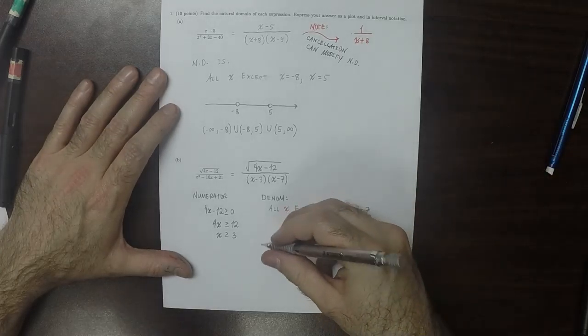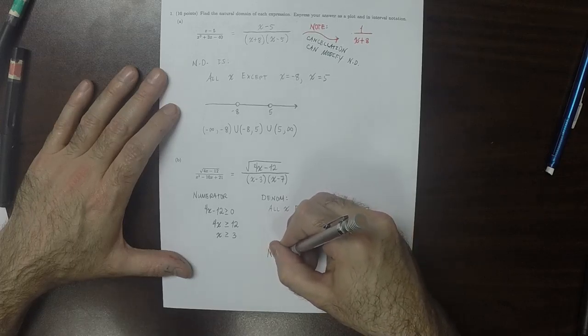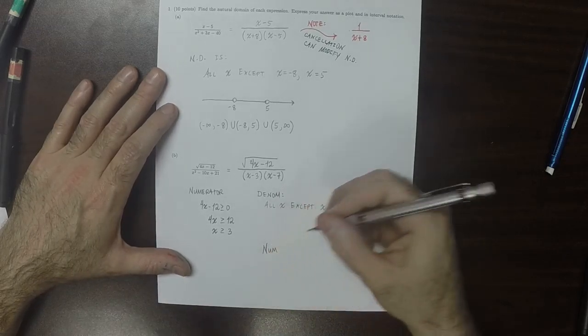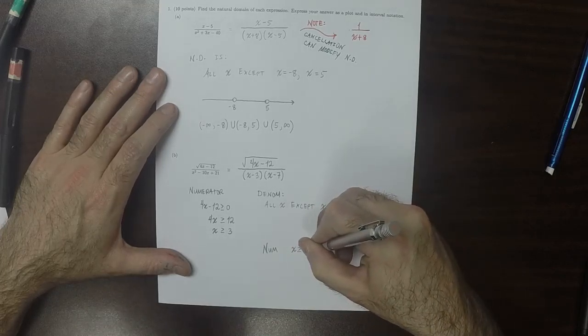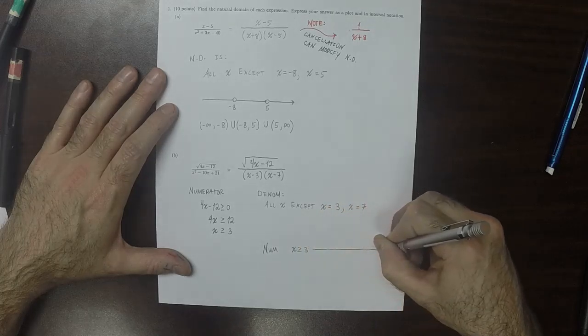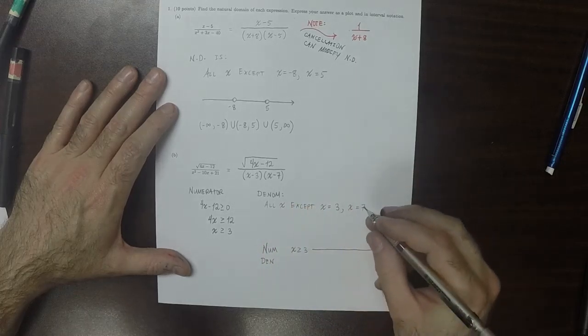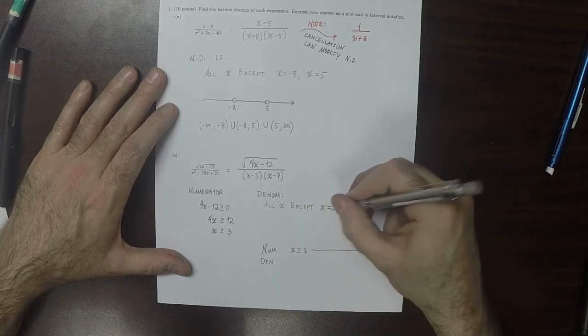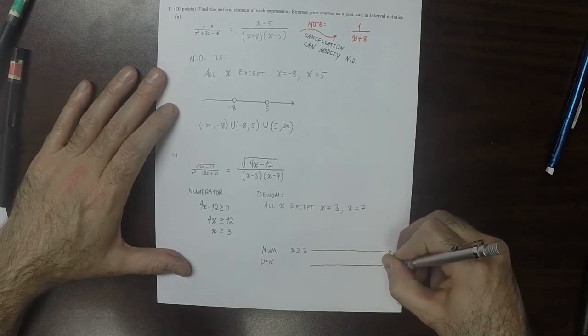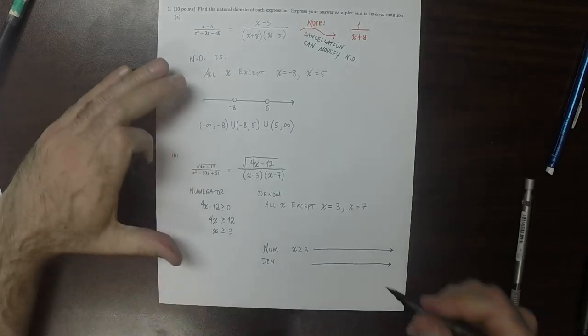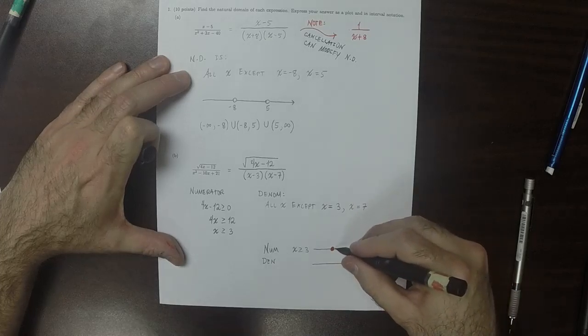So the denominator is any x except x is 3 and x is 7. So taking these together, the numerator requirement is that x is greater or equal to 3.